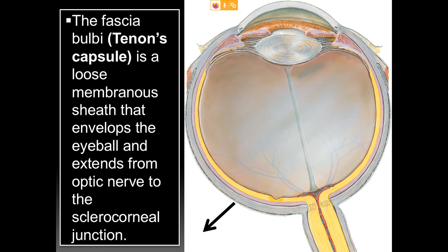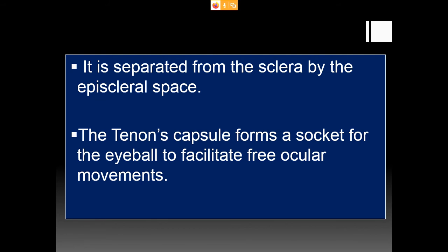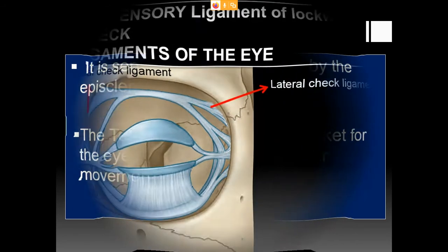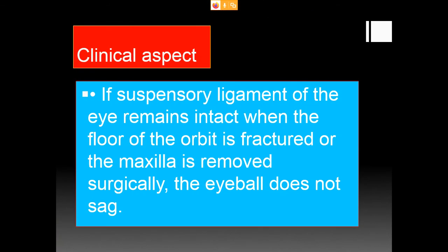The fascia bulbi, also called Tenon's capsule, is a loose membranous sheet that envelops the eyeball and extends from the optic nerve to the sclerocorneal junction. It is separated from the sclera by the episcleral space and forms a socket for the eyeball to facilitate free ocular movements. The medial check ligament attaches to the medial part of the roof of the orbit, and the lateral check ligament attaches laterally. Clinically, if the suspensory ligament of the eye remains intact when the floor of the orbit is fractured or the maxilla is removed surgically, the eyeball does not sag.